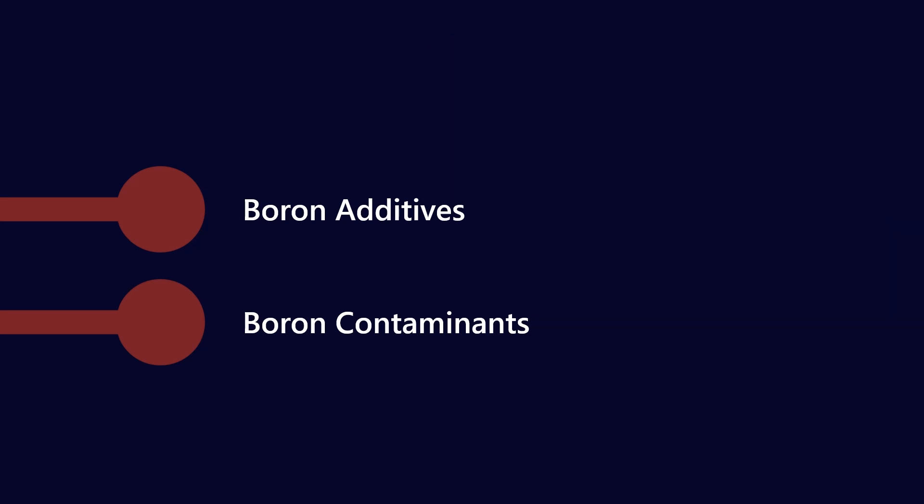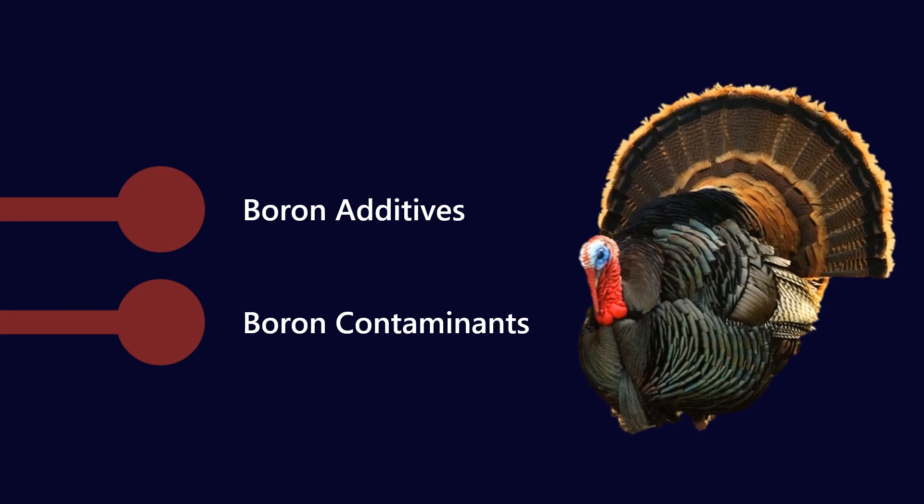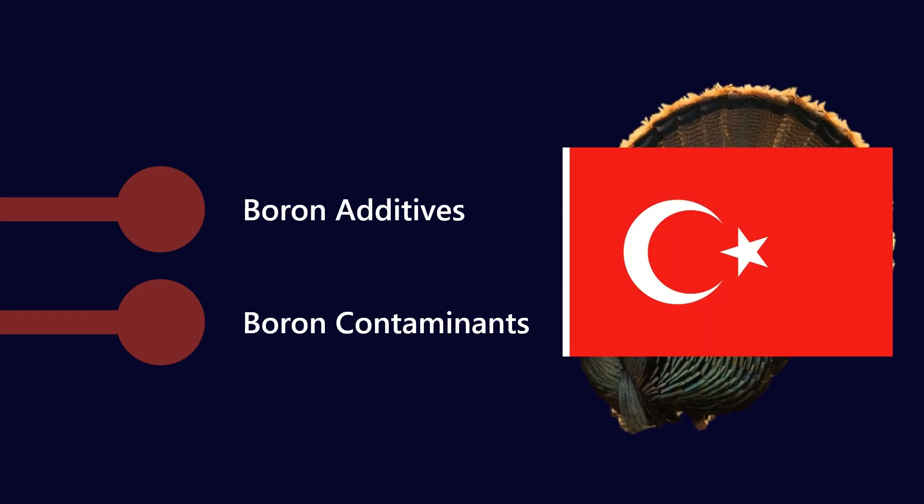Most of the boron in the world is mined. It's a water-soluble substance so it tends to be found in crystalline form, and most of it is mined in Turkey — obviously not that turkey or this turkey.